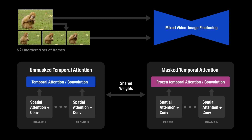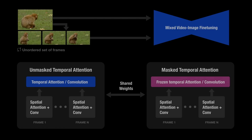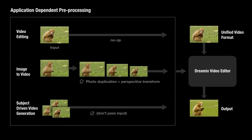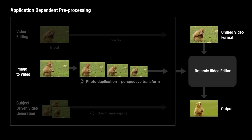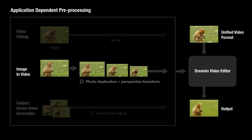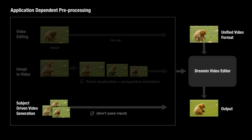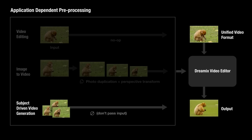This has the benefit of preserving the appearance of the video while allowing us to edit its motion. As an extreme example, it allows adding motion to a static video. Using our general video editor, we further propose a new framework for image animation. By simply duplicating the input frame and transforming it using perspective transformations, we can synthesize a coarse video with some camera motion. Passing it through our Dreamix video editor, we can edit both appearance and motion using a text prompt.